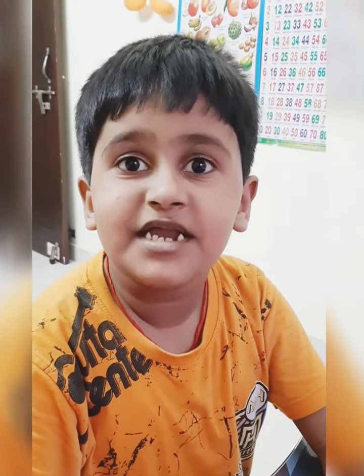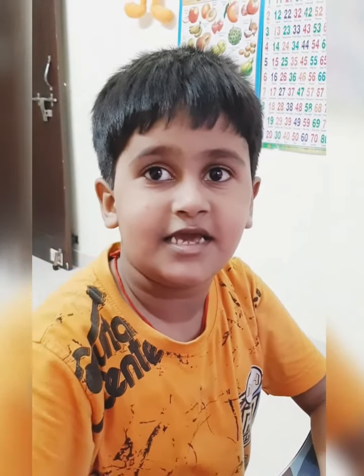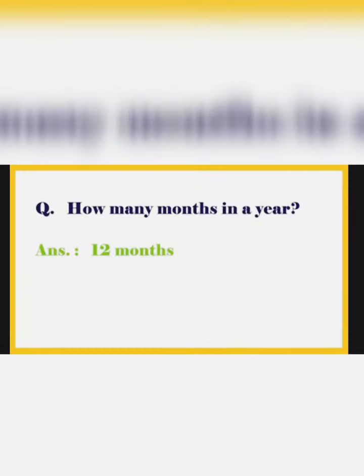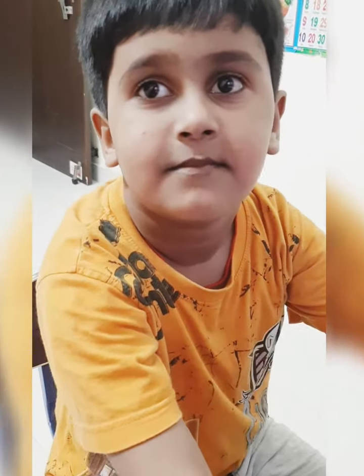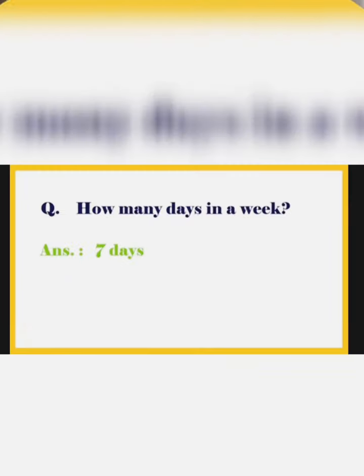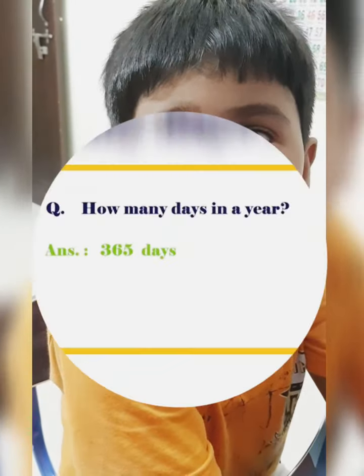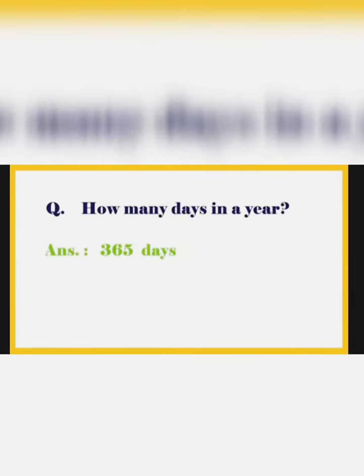We walk with our… Let's! How many months in a year? 12 months. How many days in a week? 7 days. How many days in a year? 365 days.